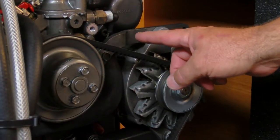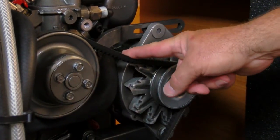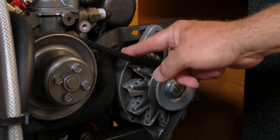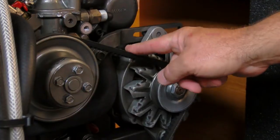To check for belt tension, depress on the belt. The belt should not deflect any more than the width of the belt.